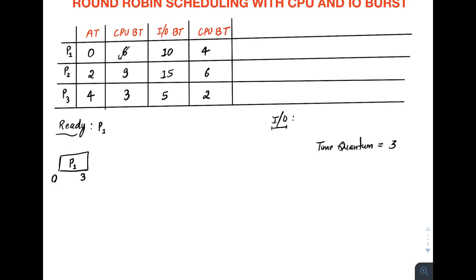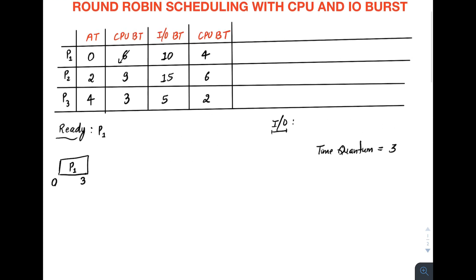P1's first CPU burst is six units, so after running from 0 to 3 it has three units remaining. At time three, P2 would have already arrived (it arrived at time two), so P1 is removed from the CPU and added to the tail of the ready queue behind P2. Since P2 arrived before P1 completed, P2 comes next in the queue.